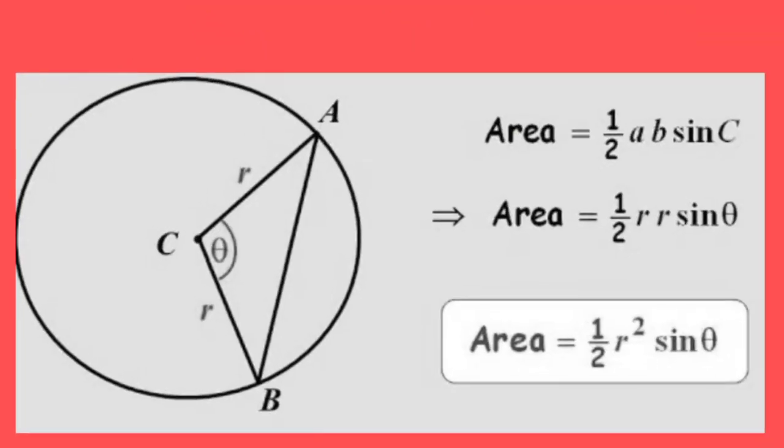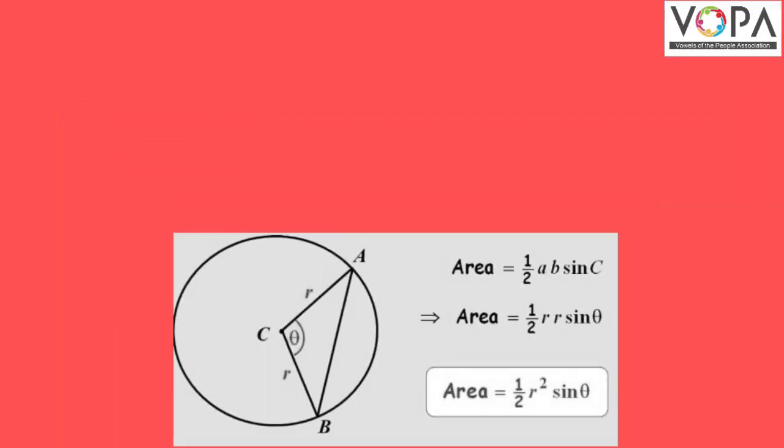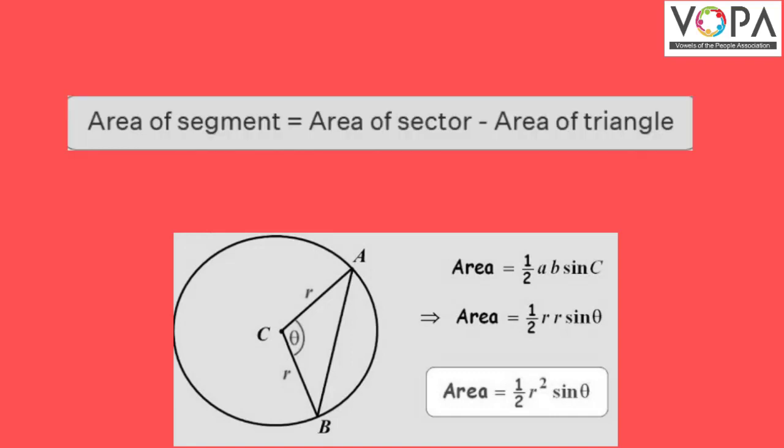If a triangle is formed by the two radii of a circle and the chord, the area of the triangle is given by the formula: half times R squared times sine theta, where theta is the central angle. Therefore, the area of the segment equals the area of the sector minus the area of the triangle.